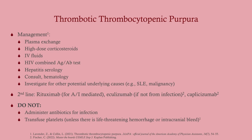Management depends on how emergent the case is: plasma exchange, corticosteroids — remember this is usually antibody-mediated — and IV fluids. Investigate possible causes such as HIV and hepatitis, and especially in a young woman, work up for connective tissue disorders. Consult hematology. Since TTP is antibody-mediated, rituximab is a good option — it inhibits CD20 on B cells, which make the antibodies. Do not administer antibiotics for the infection, as killing the bacteria can make things worse. Do not transfuse platelets — it will just cause more clotting and more shearing of red cells, making it worse.